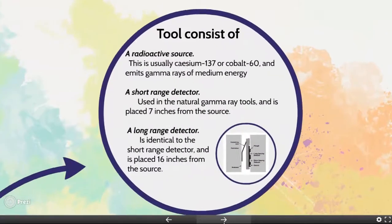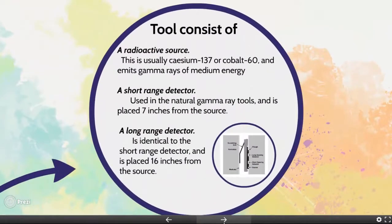The tool consists of a radioactive source, usually Cesium-137 or Cobalt-60, which emits medium energy gamma rays. For example, Cesium-137 emits gamma rays with an energy of 0.662 mega-electronvolts.